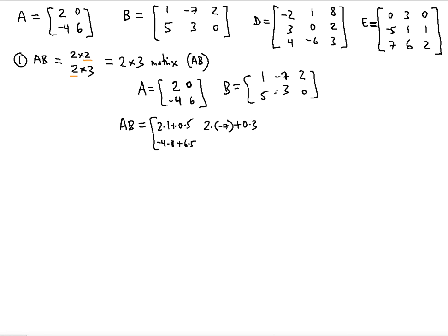For second row, second column: negative 4 and 6 multiplied with negative 7 and 3, giving negative 4 times negative 7, plus 6 times 3. For first row, third column: 2 times 2, plus 0 times 0. For second row, third column — the final entry: negative 4 times 2, plus 6 times 0.